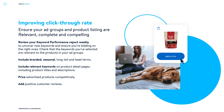Here are some best practices for improving your click-through rate. Number one: ensure your product titles, descriptions, and product detail pages are relevant, complete, and compelling — are you offering exactly what the customer is searching for? Review the keyword performance report and item keyword report to uncover new keywords and ensure you're bidding on the right keywords.